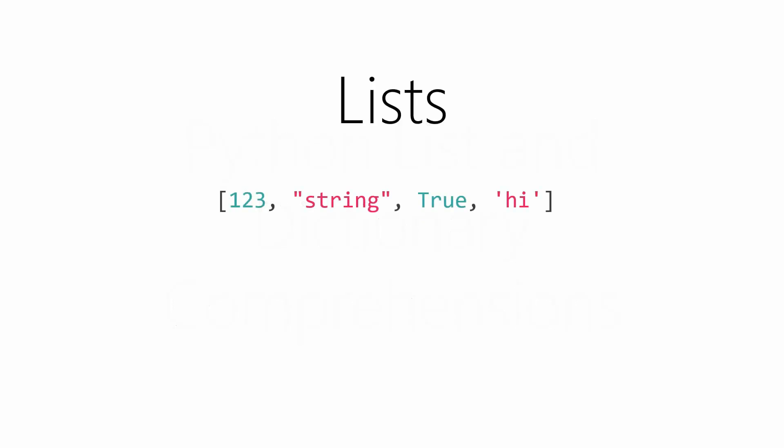A list is just a collection of items in sequential order, and we access each item based on its index starting at zero. So in this case, item 123 has an index of zero, string has an index of one, etc. In Python, lists are surrounded by square brackets. And unlike a lot of other programming languages, they can contain a mixture of different data types.